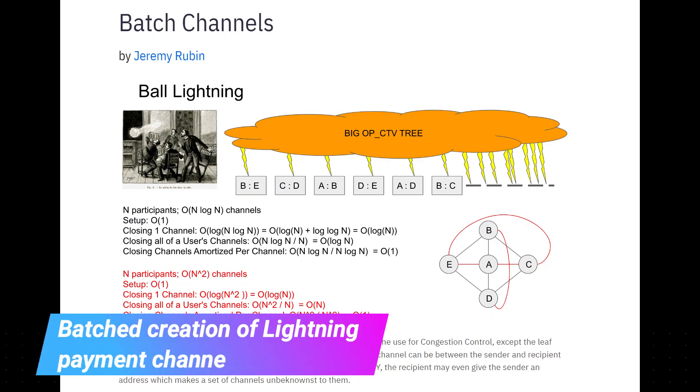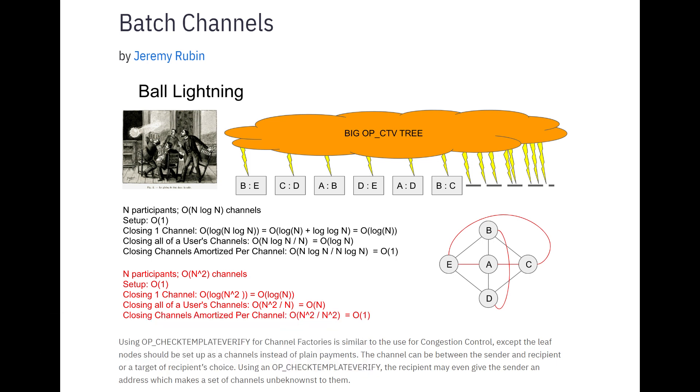There are also some pretty cool implications for Lightning, including batched channel creation. This is really important when you think about how we're going to get 8 billion people onto the Lightning network. Basic math shows that each Bitcoin block, produced every 10 minutes on average, can only fit so many transactions. Even if we dedicated all that block space to new channel openings for Lightning, it would take quite a long time to onboard everyone. This could be a big deal for mass adoption.